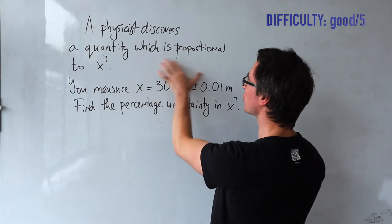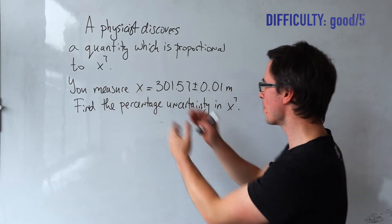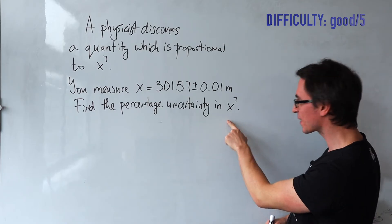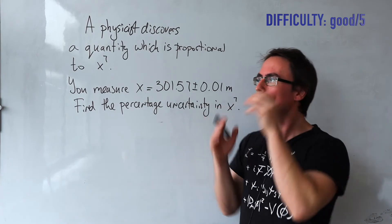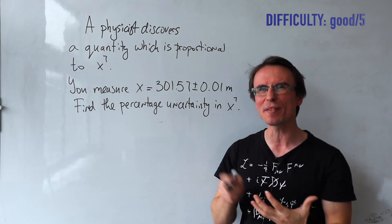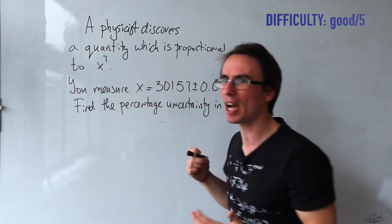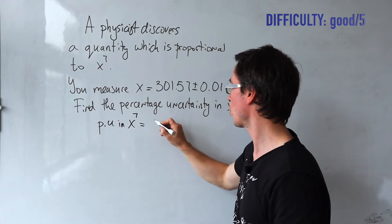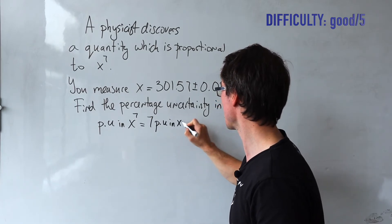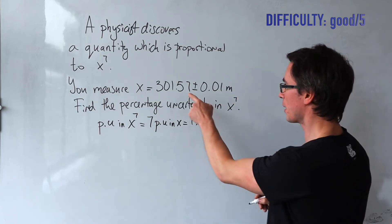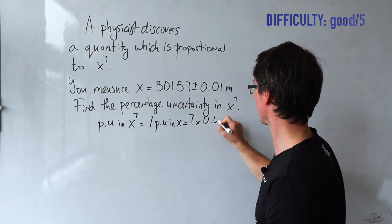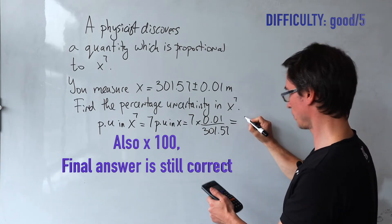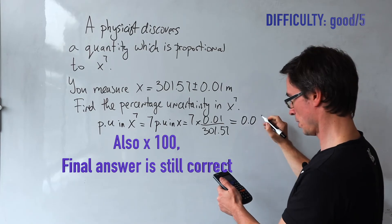Next: a physicist discovers a quantity proportional to x to the power of 7, and we measure x to be 301.57 plus or minus 0.01 meters. Find the percentage uncertainty in x raised to the power of 7. Remember, raising a quantity to a power is equivalent to multiplying it that many times, so the percentage uncertainty in x to the power of 7 is 7 times the percentage uncertainty in x. That gives 7 times 0.01 divided by 301.57, which is plus or minus 0.02%.